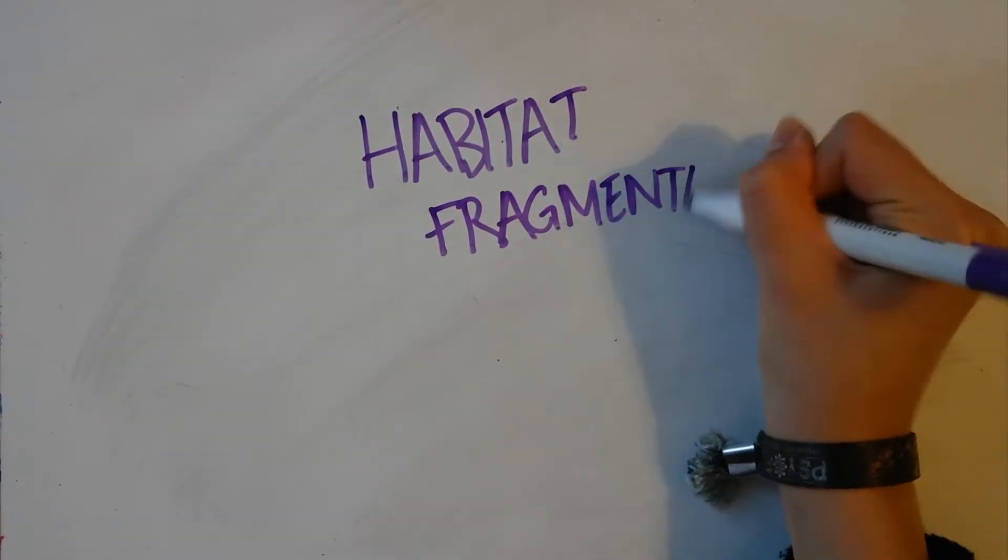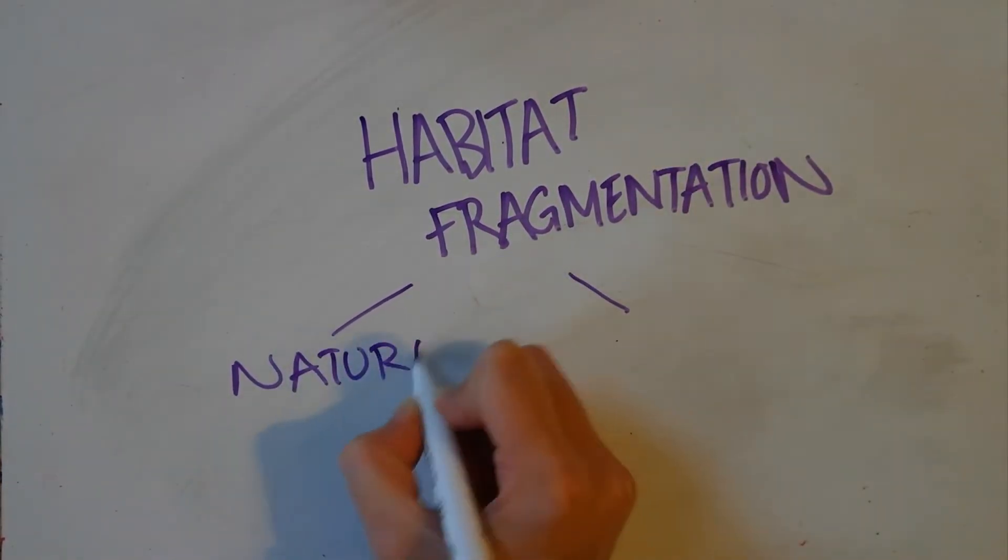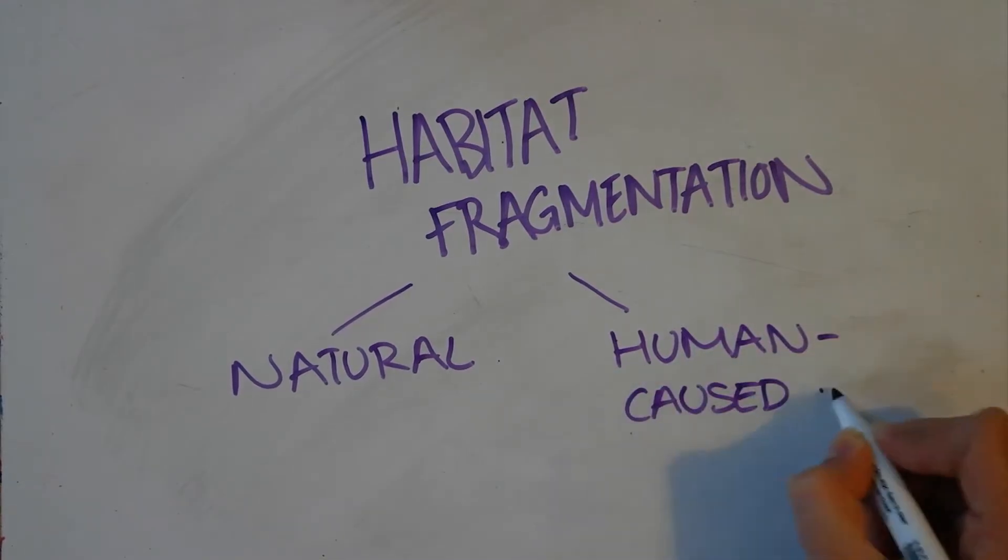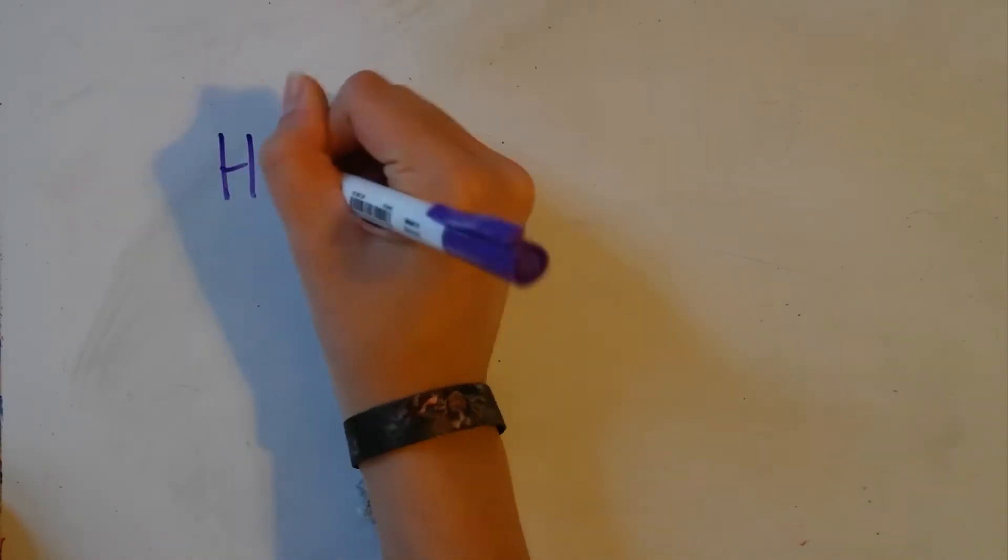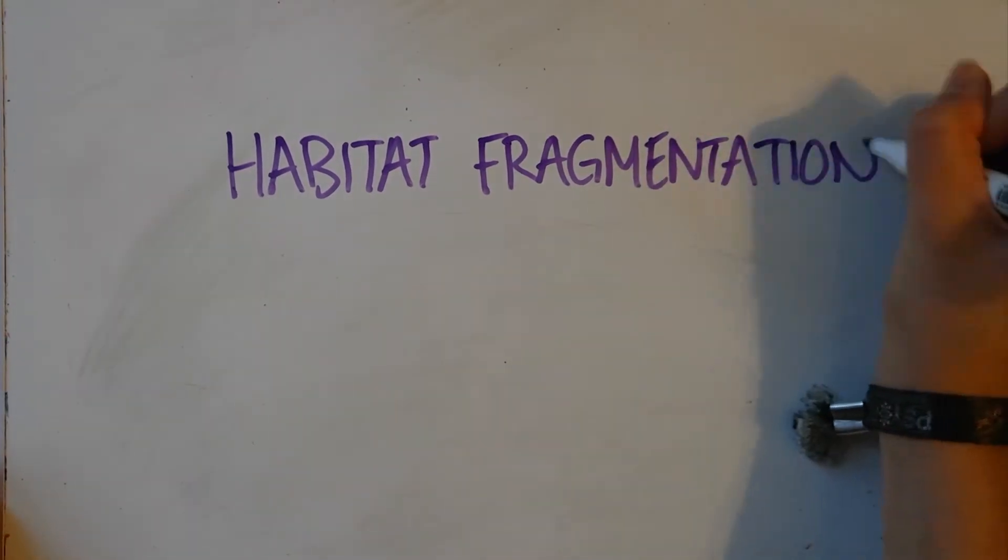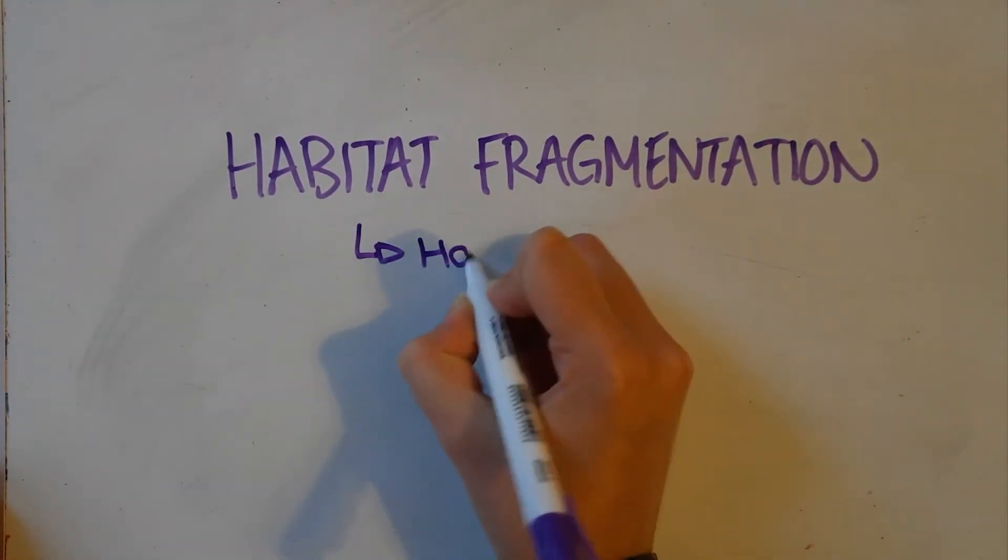Habitat fragmentation is caused by two things: humans and natural events, the former making up a larger percentage of the causes behind this problem. Within these two categories, research has shown three different types of habitat fragmentation.